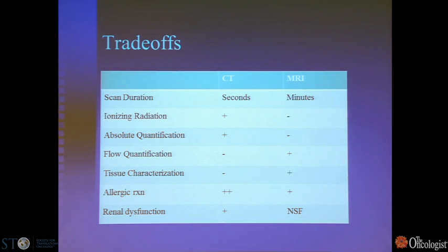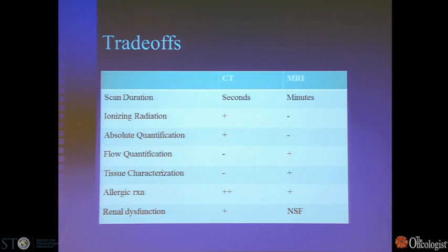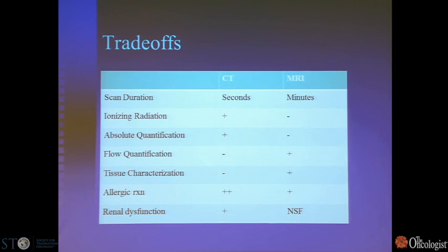One big advantage of CT is the time it takes to acquire an image, which is seconds as opposed to MR, which more commonly is several minutes for a complete study. Ionizing radiation is present in CT. Absolute quantification is more readily obtained with CT because the Hounsfield unit is normalized to that of water, whereas MRI image intensities are typically more subjective. You can have ratios of pre- and post-contrast imaging for relative enhancement, but there isn't an absolute scale in the same way as CT. Flow quantification can be done with MR without contrast, and tissue characterization is superior with MR.